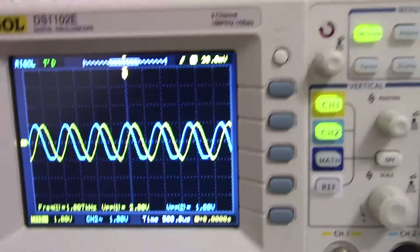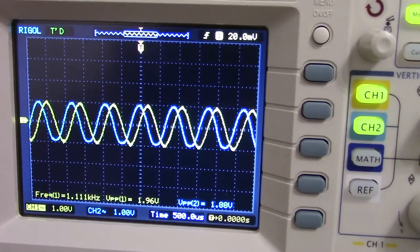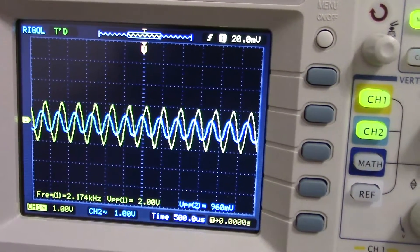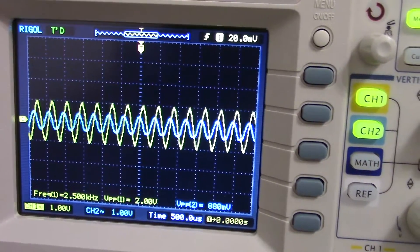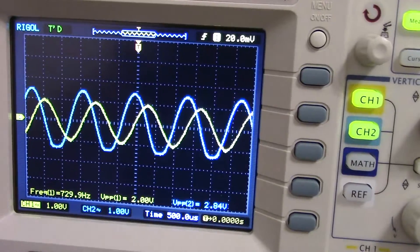So to show that this works, if I change the frequency, the blue line should change in amplitude. So as I increase the frequency, the amplitude of the output decreases. If I decrease the frequency, the amplitude increases.